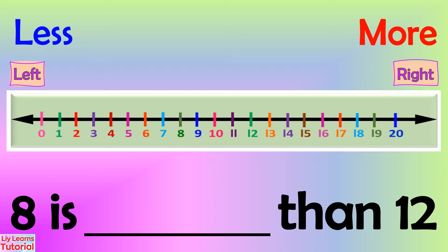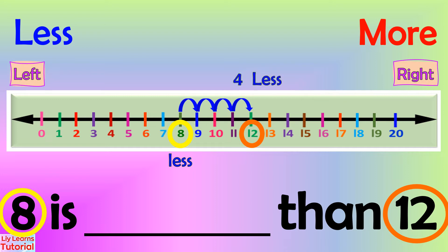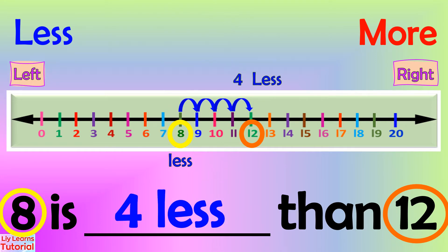In the given question, 8 is blank than 12. Let's circle 8 and 12 on the number line. 8 is at the left side, so it is smaller or less. Then we count on until 12 to see how many less 8 is compared to 12: 1, 2, 3, 4 — 4 less. Therefore, we'll write: 8 is 4 less than 12.